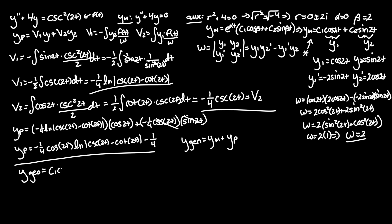So y homogeneous, as we said previously, equals c1 cosine of 2t plus c2 sine of 2t. And we just add our y particular. So negative one fourth cosine of 2t times ln absolute value of cosecant of 2t minus cotangent of 2t minus one fourth.